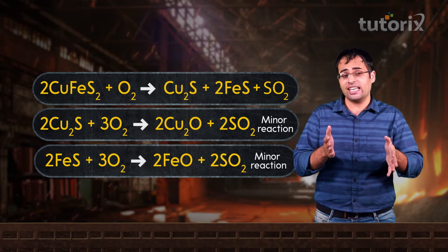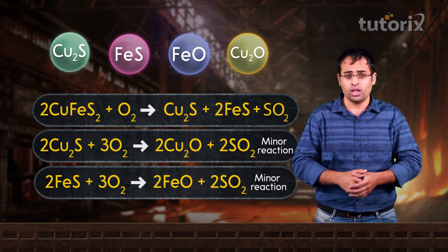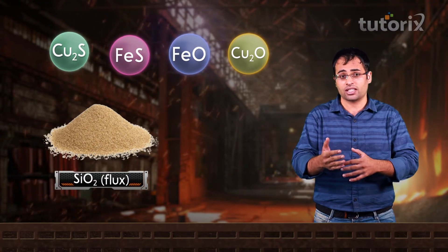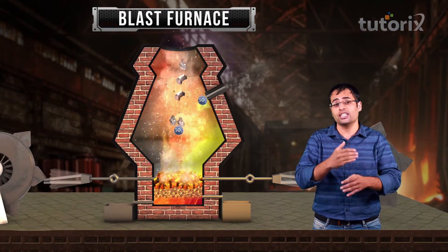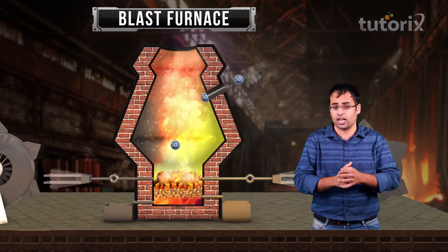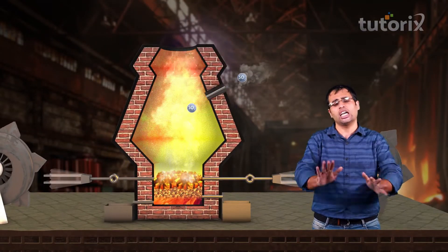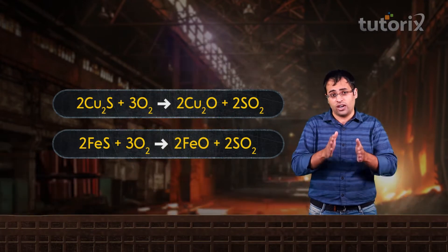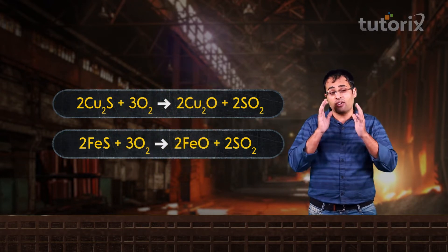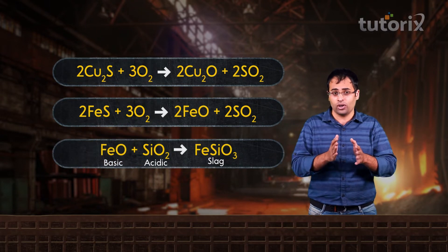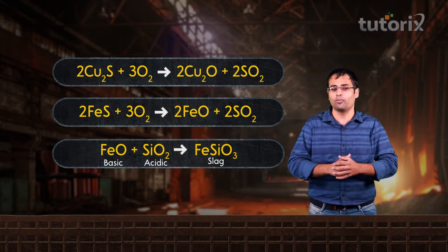After this process of roasting, we are majorly left with cuprous sulfide, ferrous sulfide, and small amounts of ferrous oxide and cuprous oxide. This mixture is mixed with sand or silica, which acts as flux, along with coke and fed into a blast furnace. In this blast furnace, the mixture is heated under a blast of hot air. Cuprous sulfide and ferrous sulfide react with oxygen to convert into cuprous oxide and ferrous oxide. This ferrous oxide is a basic impurity and can be removed by reacting with silica flux, which reacts with ferrous oxide to form ferrous silicate slag that flows to the bottom of the furnace.